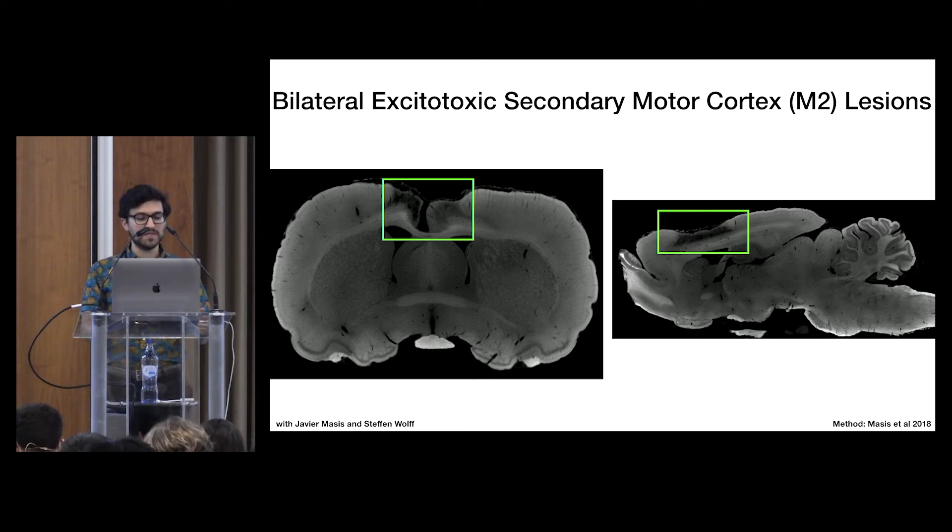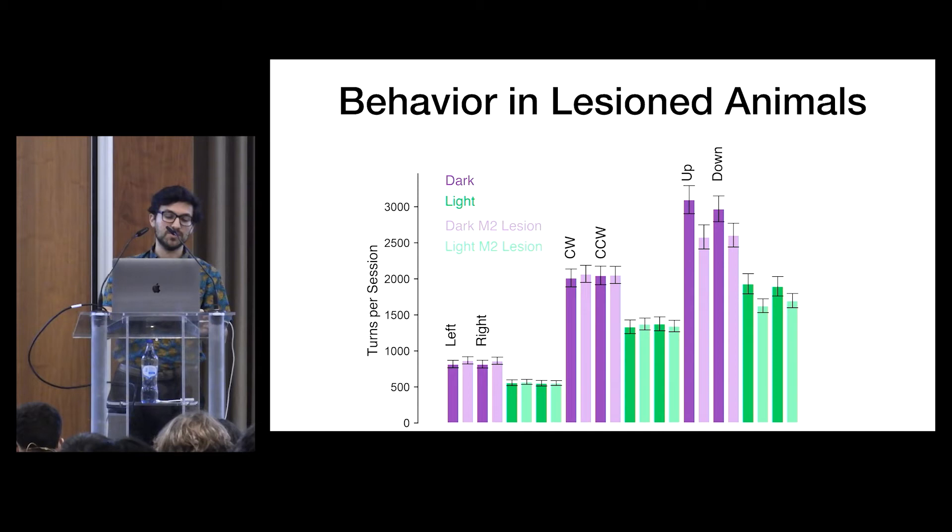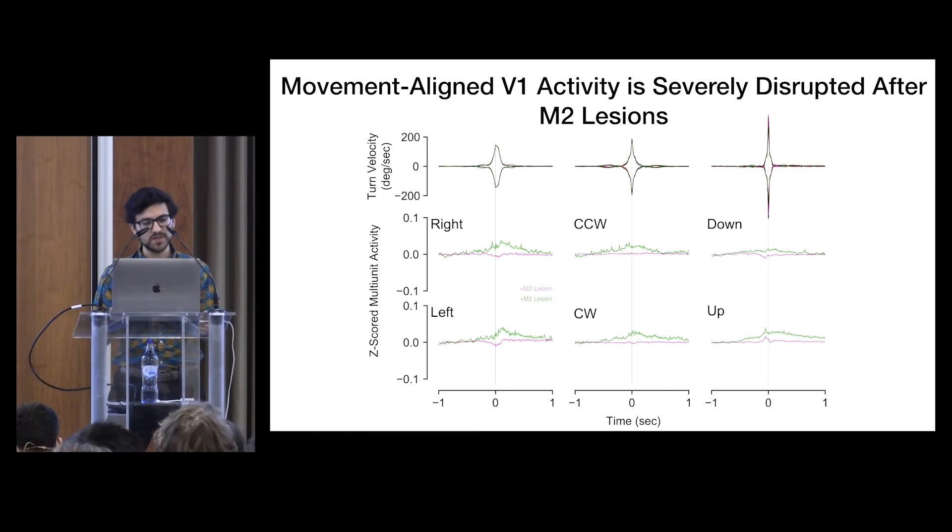And despite the severity of these lesions, these animals actually still moved normally. So here are the numbers of extracted turns per session in the four conditions. So we're satisfied that the animals still actually behaved normally despite being lesioned. So we lesioned four rats like this and implanted them with tetrodes in V1 and put them back in our behavior box.